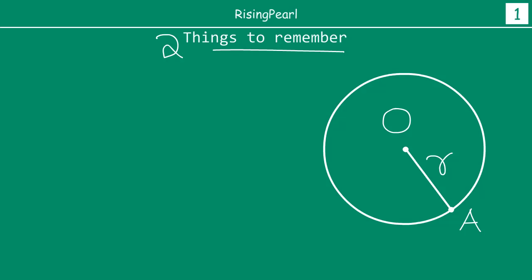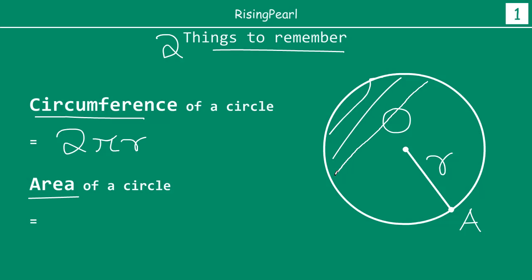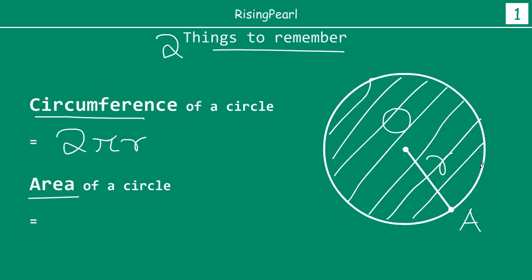The two important things to remember are the circumference of a circle and area of a circle. The formula for circumference of a circle is 2 times pi times r, where r is the radius. Circumference is the length of the boundary of the figure, given by 2πr. Area of a circle is the amount of space enclosed inside a shape. For a circle it is given by the formula πr².